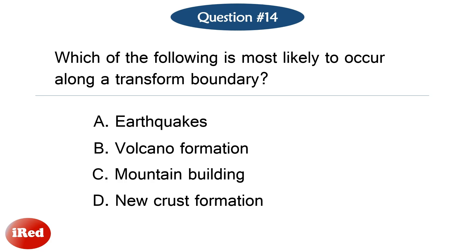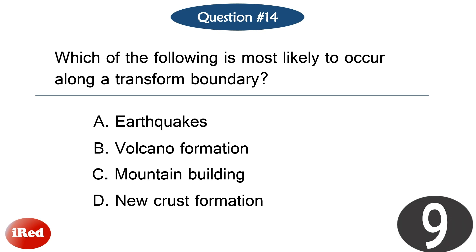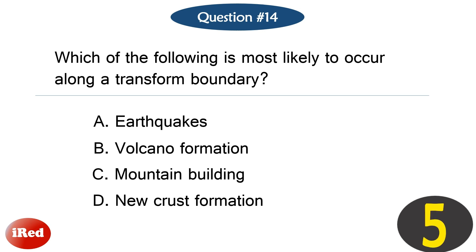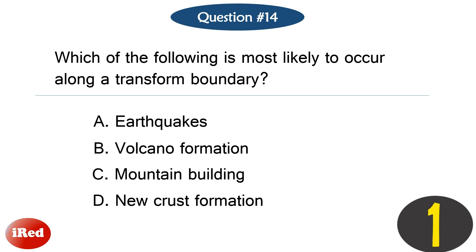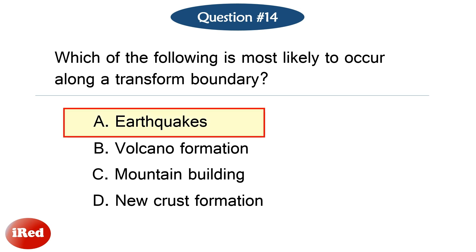Question number fourteen. Which of the following is most likely to occur along a transform boundary? The correct answer is letter D: earthquakes.